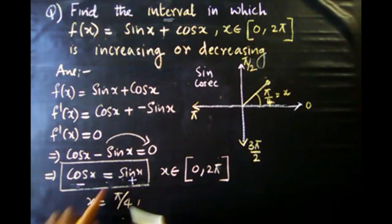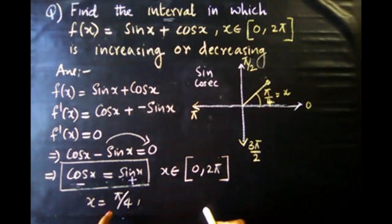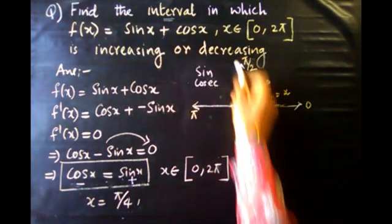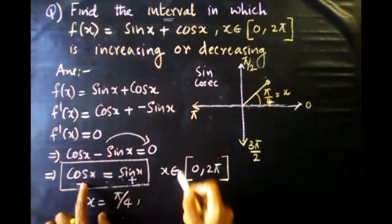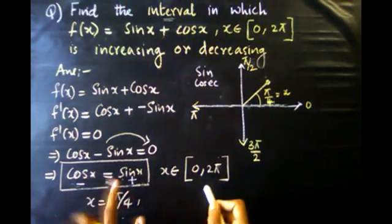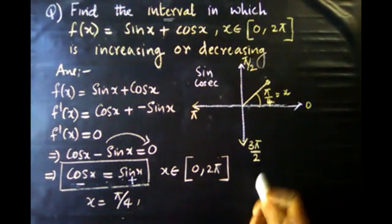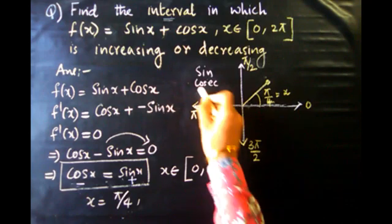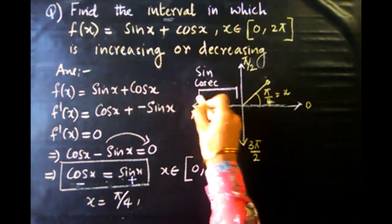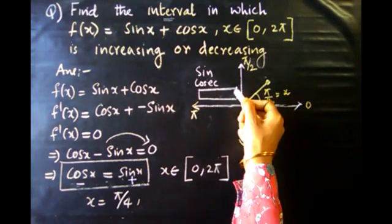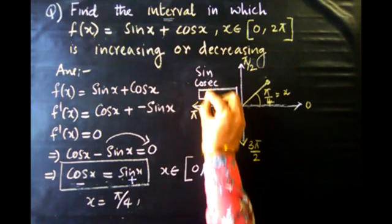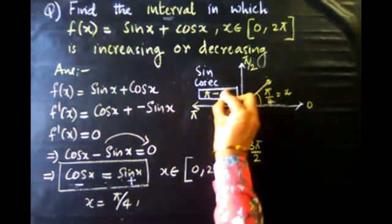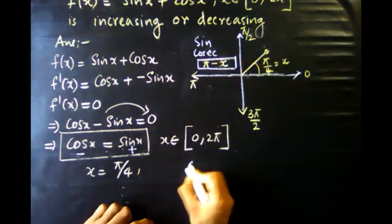Since positive is not equal to negative, in the second quadrant sin and cos cannot both be equal. We check which angle in the second quadrant makes sin and cos equal using the pi minus x formula.